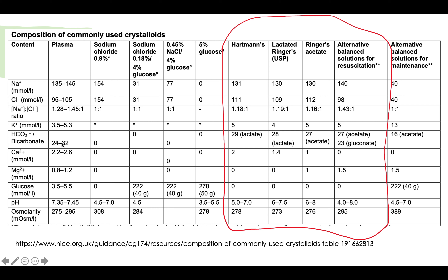There is one uncommon exception: gastric outlet obstruction. In this case, patients are losing acid and chloride. Notice that the chloride level in plasma is 95–105 mmol/L, but normal saline contains much more chloride than plasma. For gastric outlet obstruction specifically, normal saline is appropriate because you need to replace that chloride loss. For all other GI losses, Hartmann's, lactated Ringer's, Ringer's acetate, or plasma-lyte are more suitable.